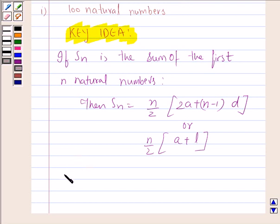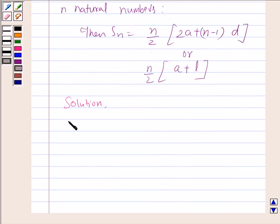So let's begin our solution. What is asked? We have to find S100. This is to find, and given is natural numbers up till 100. We know the natural numbers up till 100.